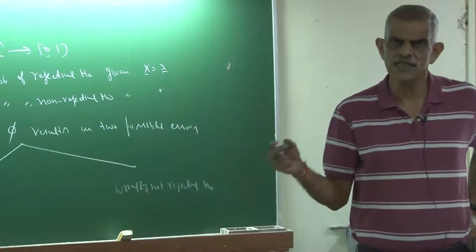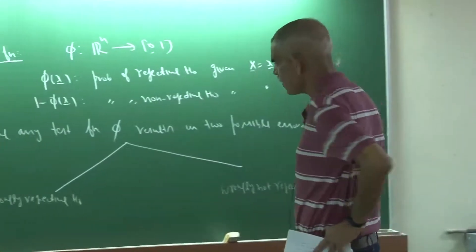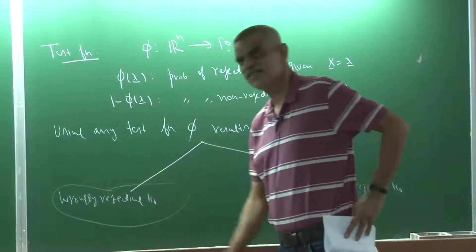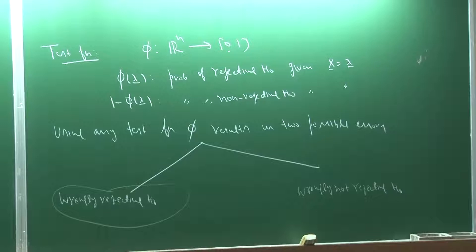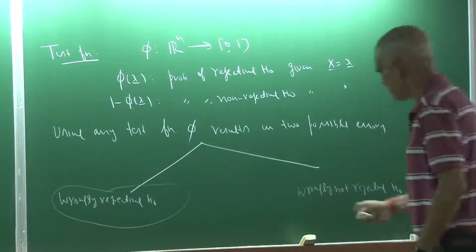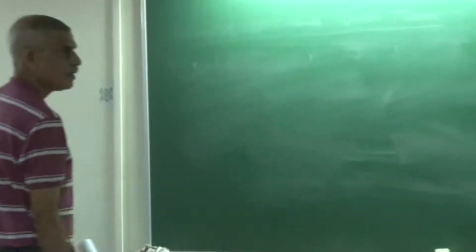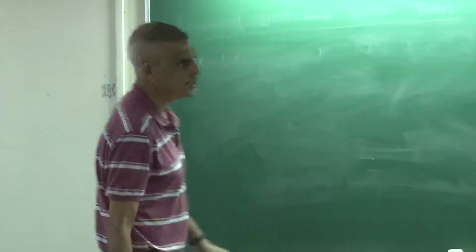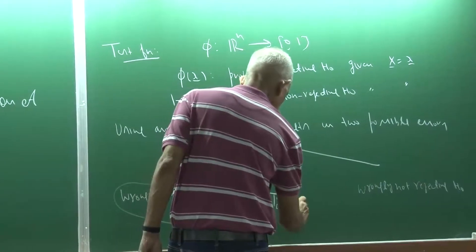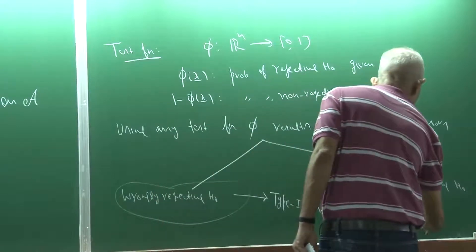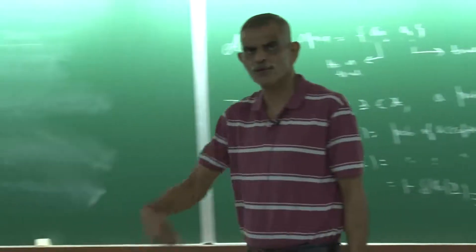Consider φ₀(x) = 1 for every x — a test that always rejects H₀. The probability of Type 1 error is 1 for every f ∈ P₀, but it minimizes Type 2 error: E_f[1 − φ₀(x)] = 0 for every f ∈ P₁. Conversely, φ₁(x) = 0 always accepts H₀: Type 1 error is 0, but Type 2 error becomes 1. There is a trade-off — if one error is minimized, the other increases.